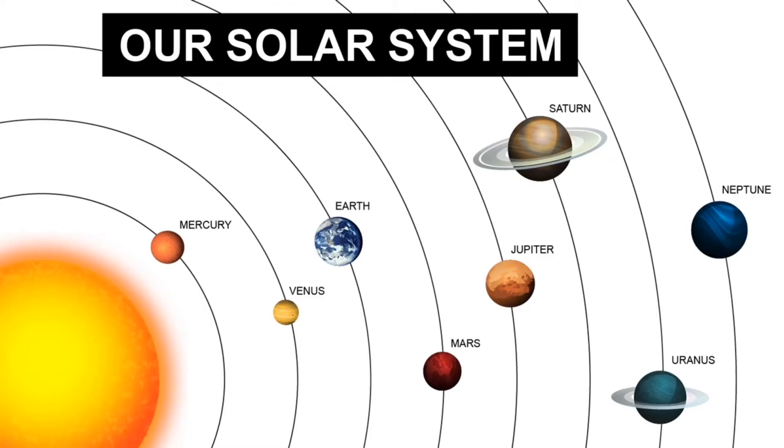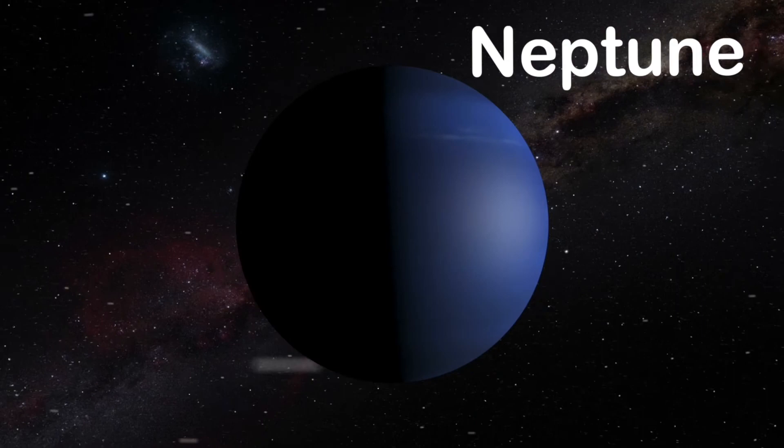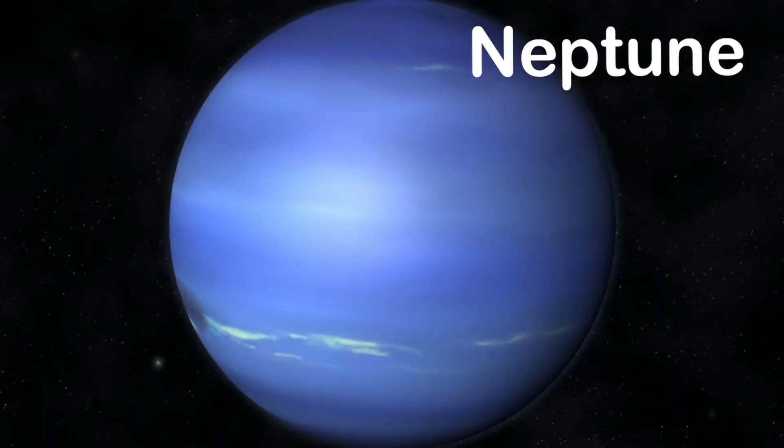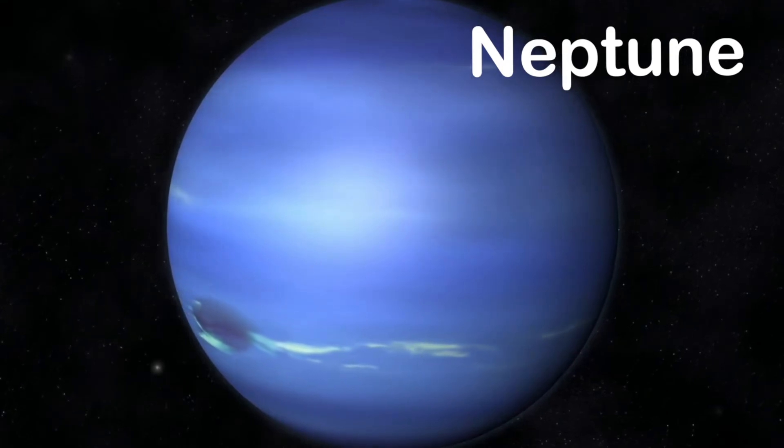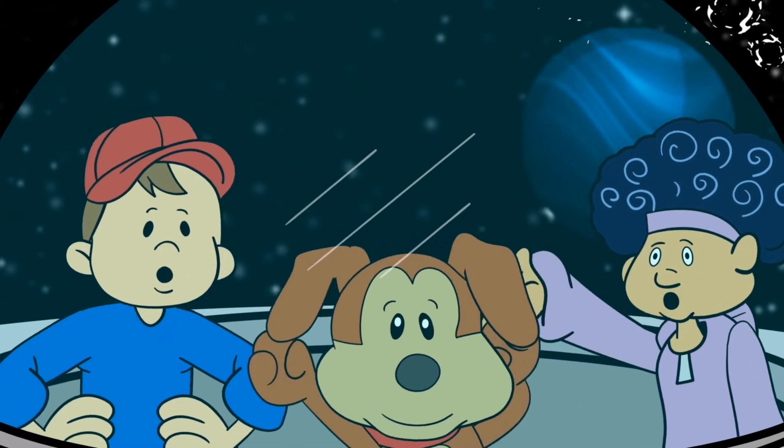The last planet in our solar system is Neptune. Neptune is the planet furthest from the sun. It's a gas giant but the smallest one. Storms rage all across its atmosphere. It orbits the sun in a hundred sixty-four years.